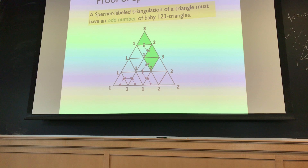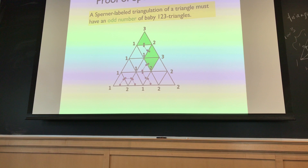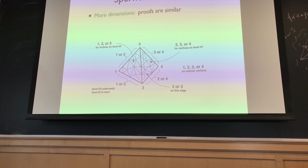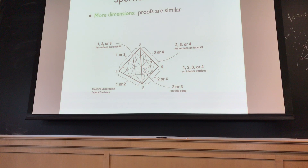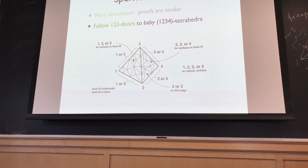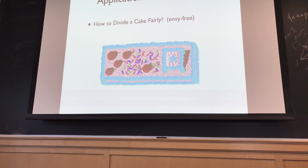Which proof do you prefer? Proof two is better because it actually leads to a constructive way of finding the triangle — not just exhaustive search — and this is what leads to algorithms. There are also multidimensional versions of Sperner's Lemma. On a tetrahedron broken into little tetrahedra: corners get different labels, edges have one of two labels, faces have one of three labels — similar conclusions and proofs follow.